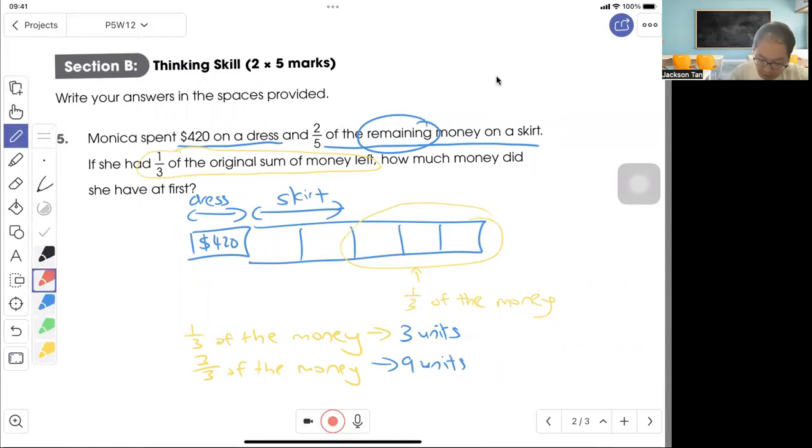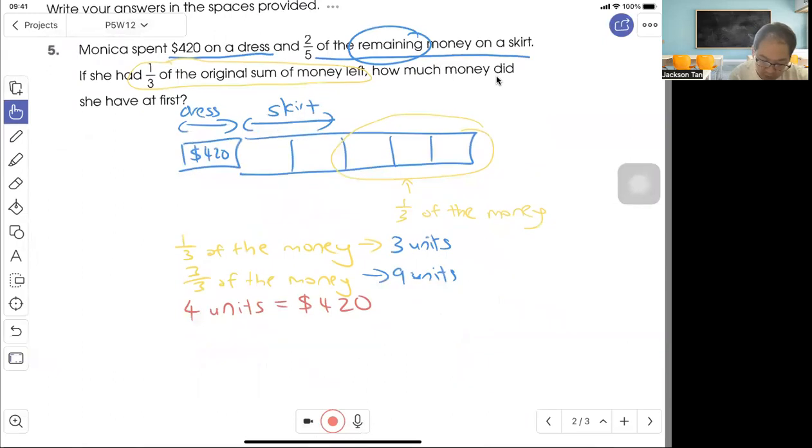So four units is $420. And the question asks how much money did she have at first. So I find one unit - $420 divided by four is $105. Nine units would be $105 times nine, $945. So she had $945 at first.